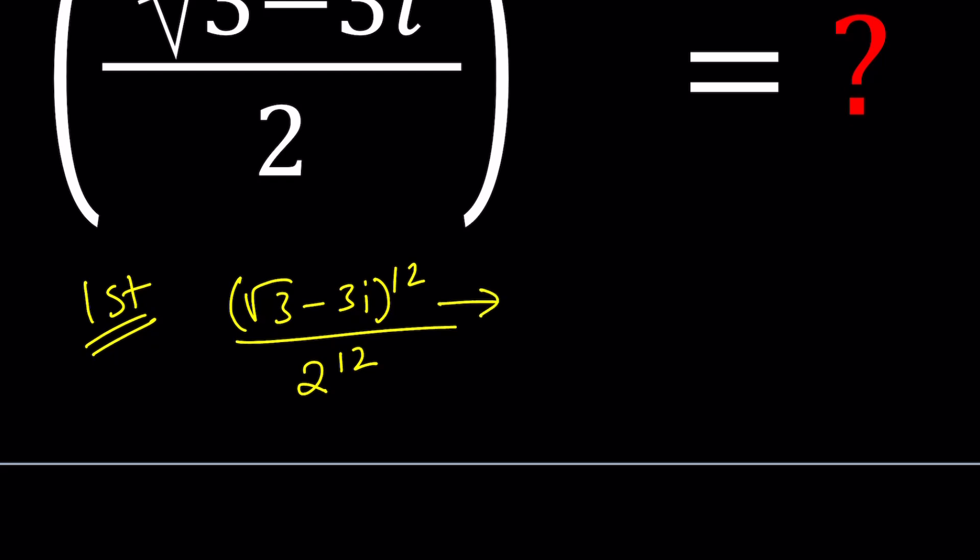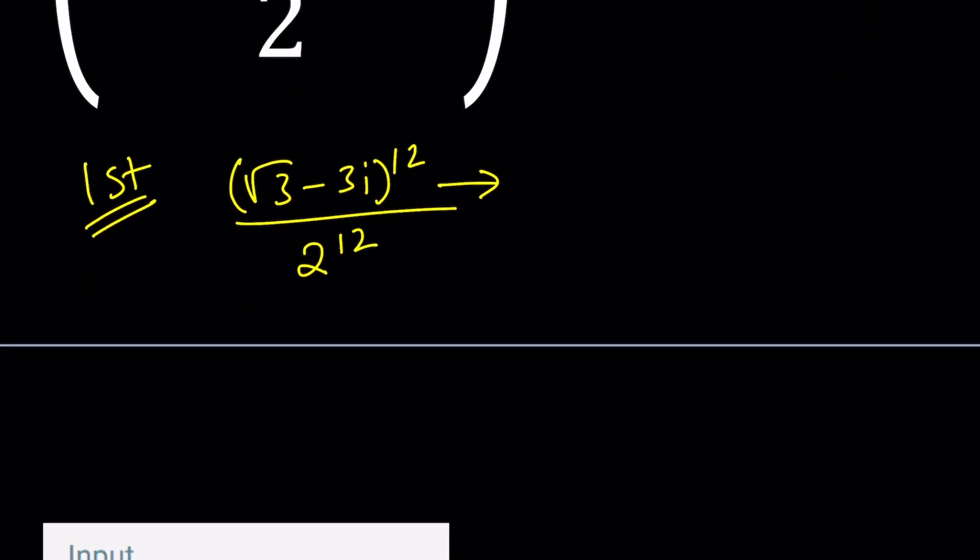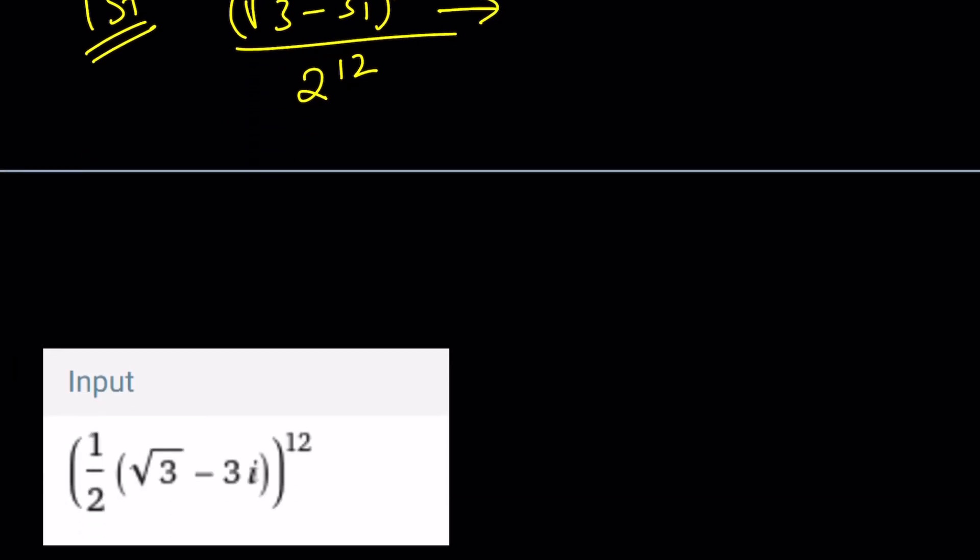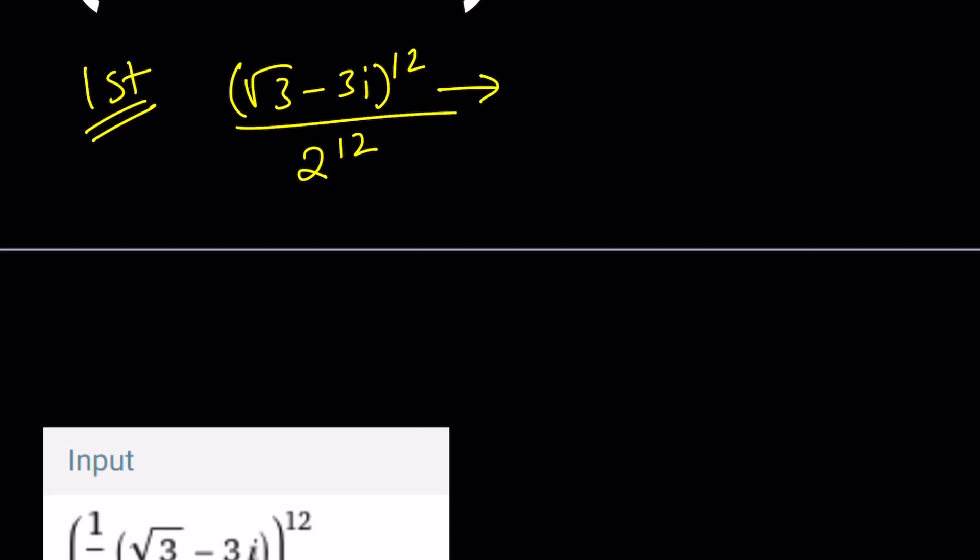Obviously I can go ahead and use the binomial theorem which is going to give me 13 terms and I can go ahead and simplify it. But that's going to take a very long time don't you think? Because we're going to have to deal with lots of terms. Now so this is going to be my input and you're going to be able to see the results from there. But first let's go ahead and evaluate this expression and see if our answer is the same as what we get from Wolfram Alpha.